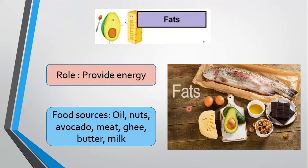The fat under the skin acts as an insulator and helps to keep the body warm. Fats are present in both animal and plant foods. Butter and ghee are animal fats and are solid at room temperature. Fats obtained from plants, on the other hand, are liquids at room temperature — for example, corn oil, groundnut oil, mustard oil, etc.